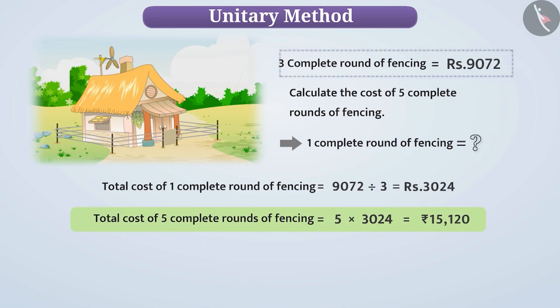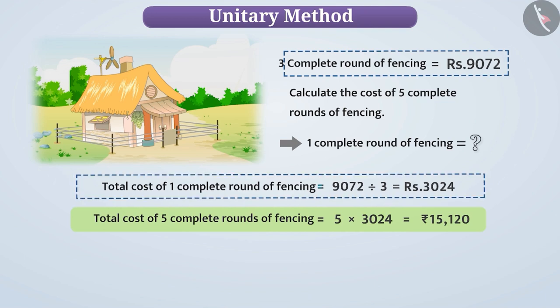Remember that if we are given the cost of more than one object, then dividing the cost by the number of objects gives the cost of one object. Then, this outcome is multiplied with the number of objects to get the cost of as many objects as wanted.